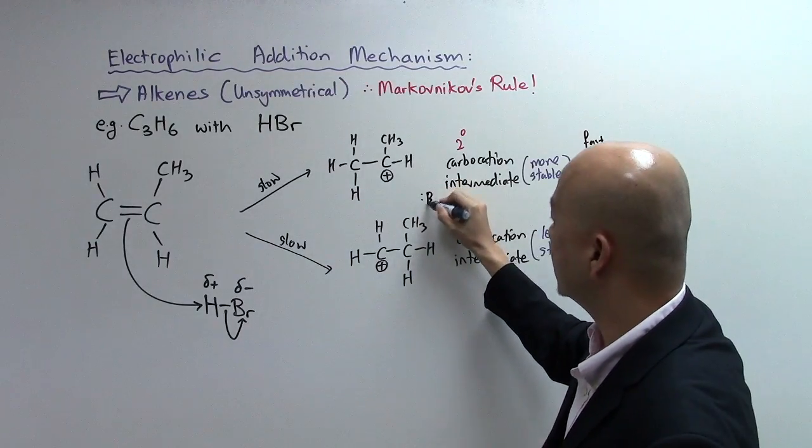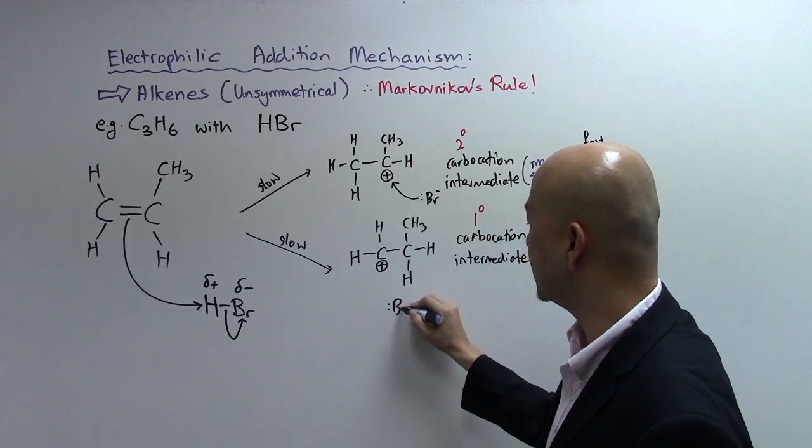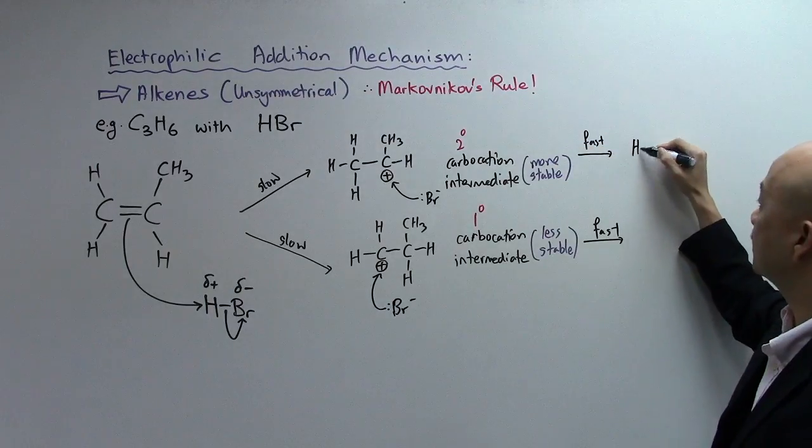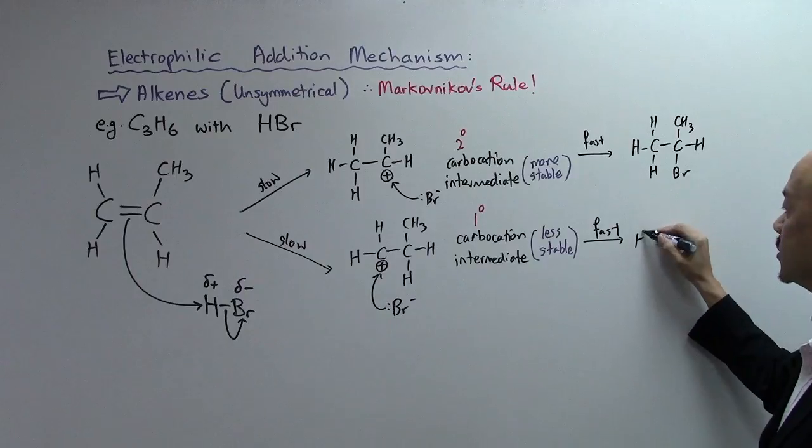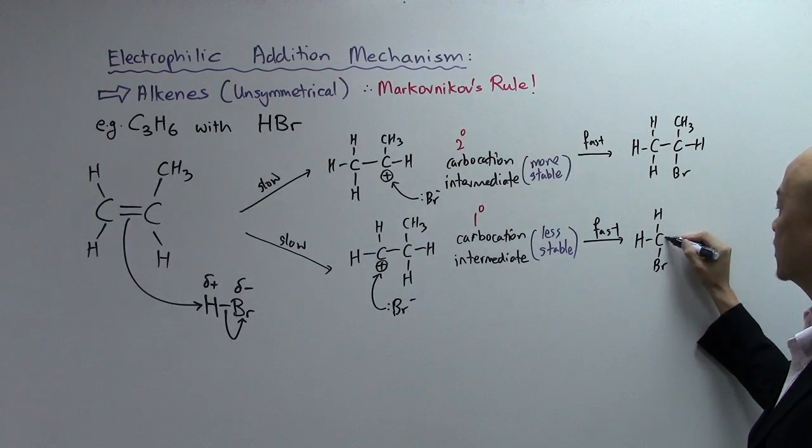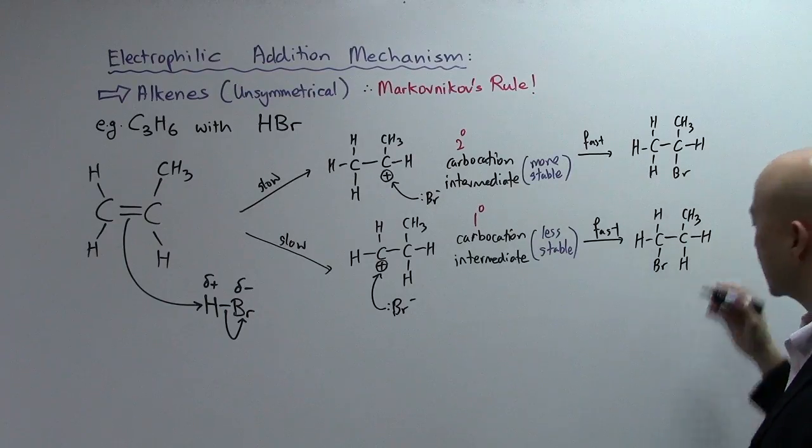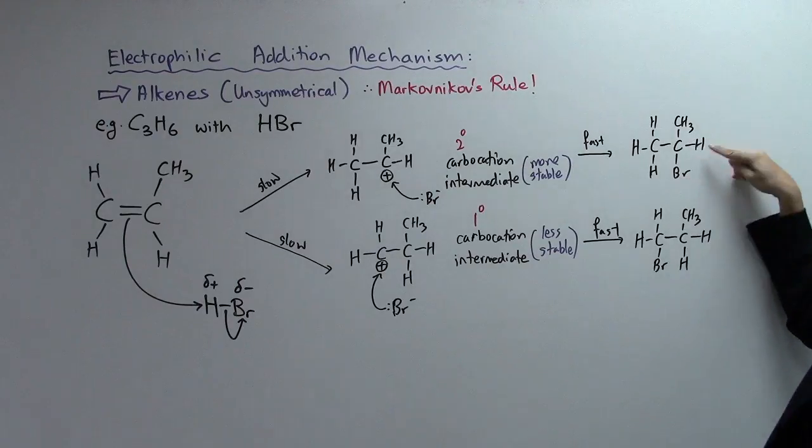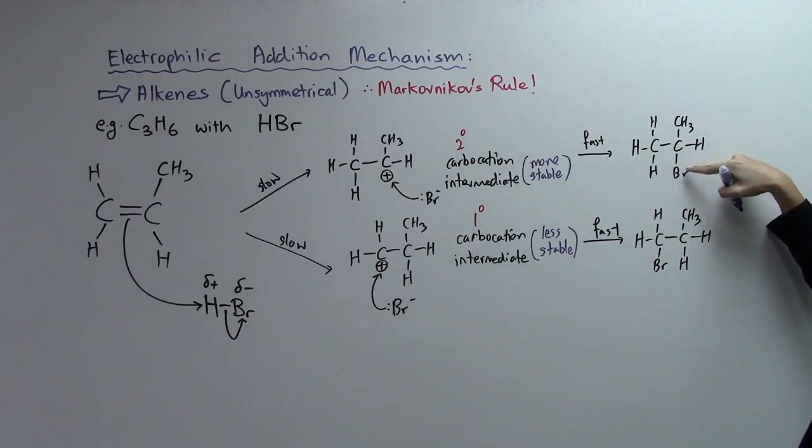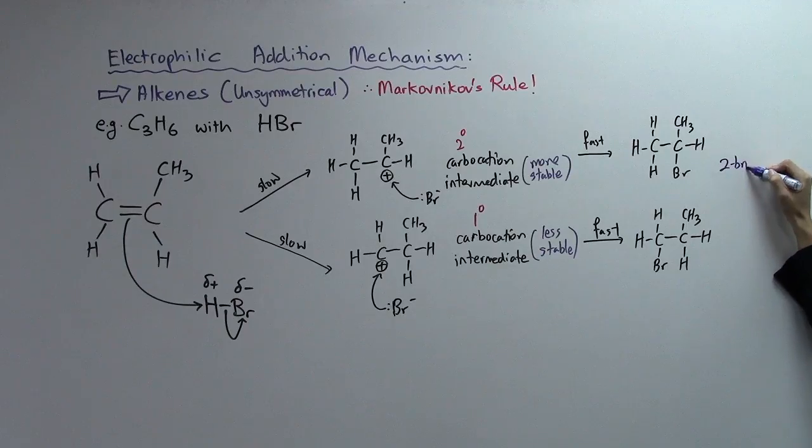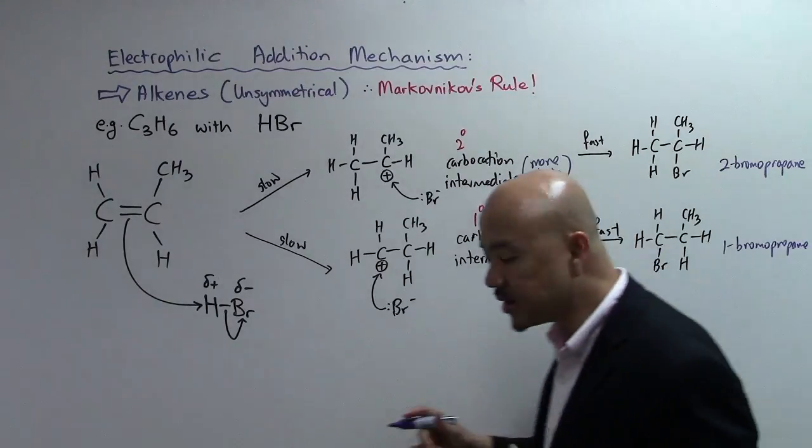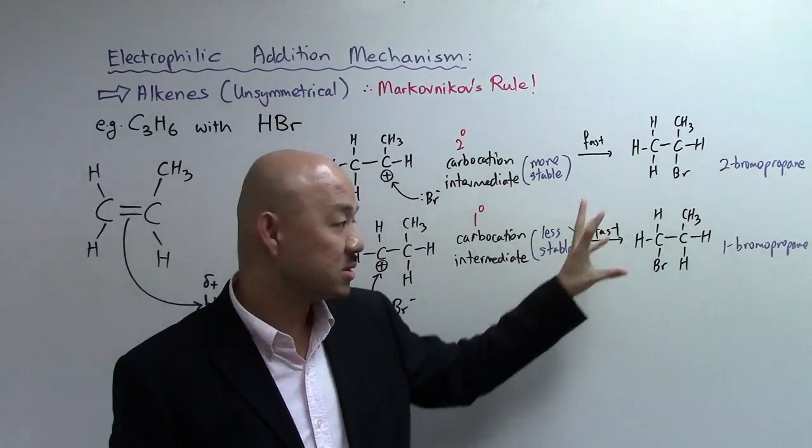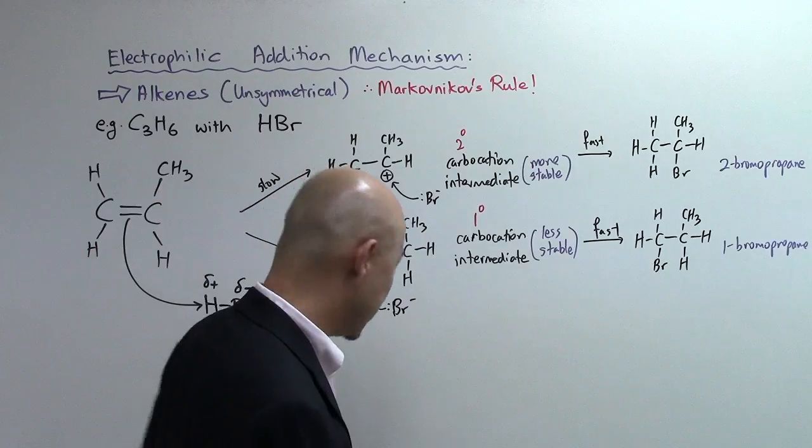And because of this, you look at the second step which is the fast step. Let's have our Br minus around, so you have Br minus attack. This will be your two products. So this is Br. Let me draw the other one - Br is here, this is CH3. These are obviously two different products. If we name it then you realize they are really different. Now this is known as 2-bromopropane, whereas this is known as 1-bromopropane.